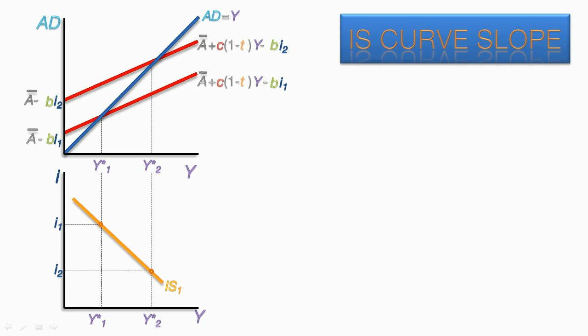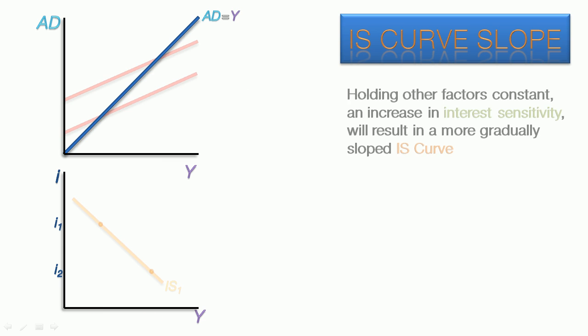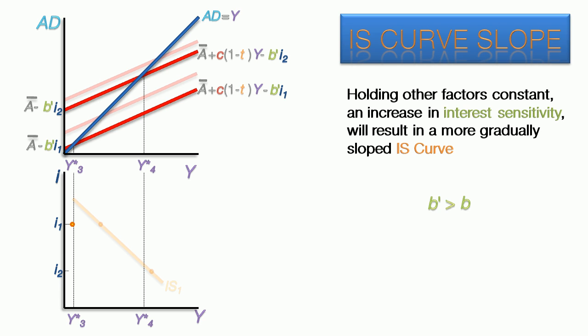Now we're going to discuss the determinants of the IS curve's slope. Holding other factors constant, an increase in interest sensitivity will result in a more gradually sloped IS curve. B prime will signify the new, higher level of interest sensitivity. Let's watch how this happens. For I-1, the higher interest rate, the downward shift is more prominent and produces a low equilibrium level of national income, Y-3. For I-2, the lower interest rate, there is a downward shift, but not as big. When we connect the points to form our second IS curve, we see that its slope is more gradual.